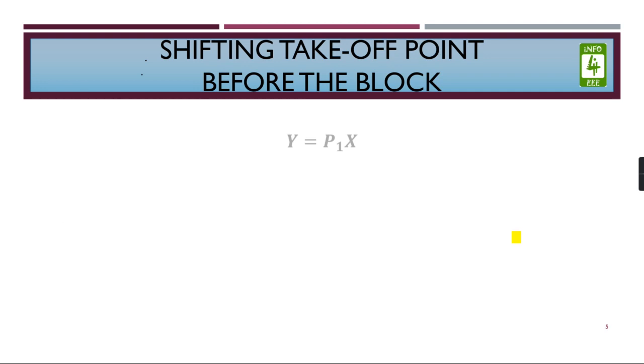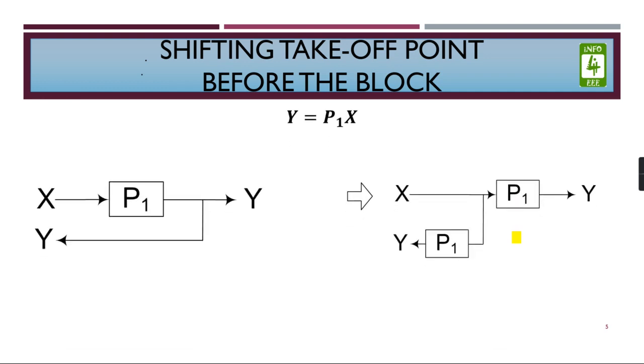Now if you have to shift the takeoff point before the block, we have to remember that it is totally opposite of what we did in shifting the summing point. To move it before the block, we have to replace the path with the similar block.